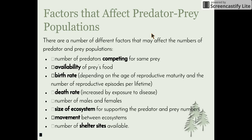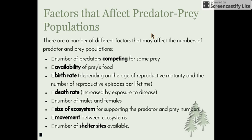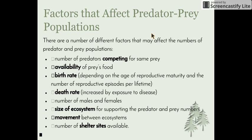Other factors include birth rate — how quickly do they reproduce and how long does it take for offspring to reach maturity? — and death rate, where exposure to disease could cause a massive increase in death rate within a particular time frame. Additional factors are the number of males and females needed for reproduction, the size of the ecosystem for supporting predator and prey numbers, movement between ecosystems through emigration and immigration, and the number of shelter sites — if prey have more places to hide from predators, they're less likely to be caught.